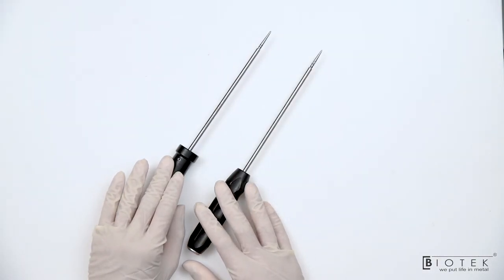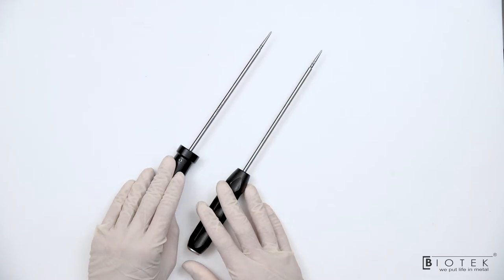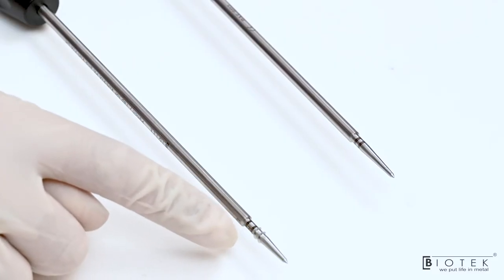These two instruments are used for insertion of rotator cuff anchors. This is punch and this is punch tap.